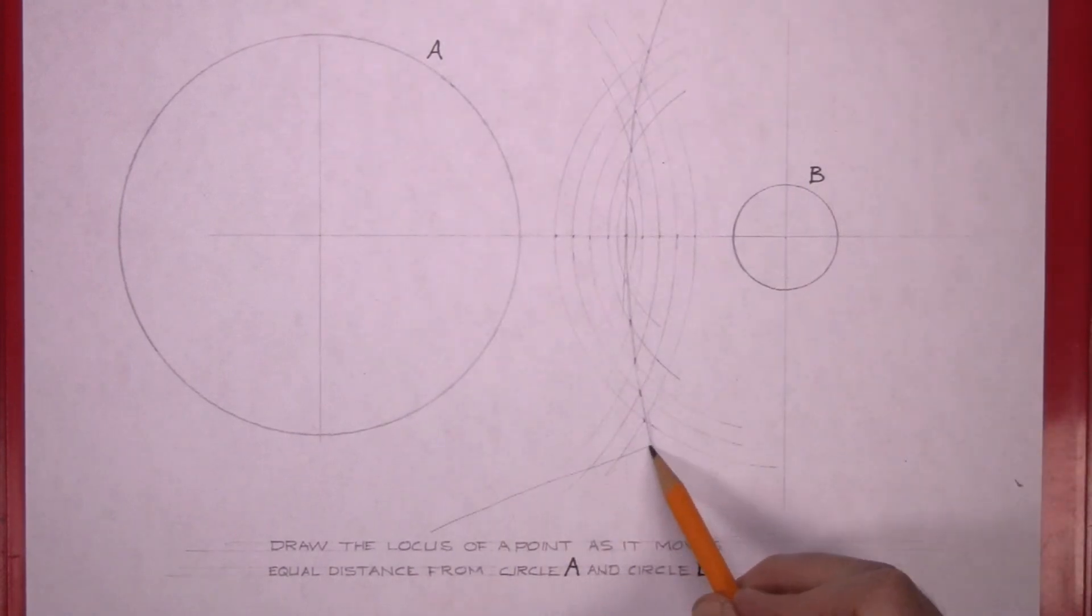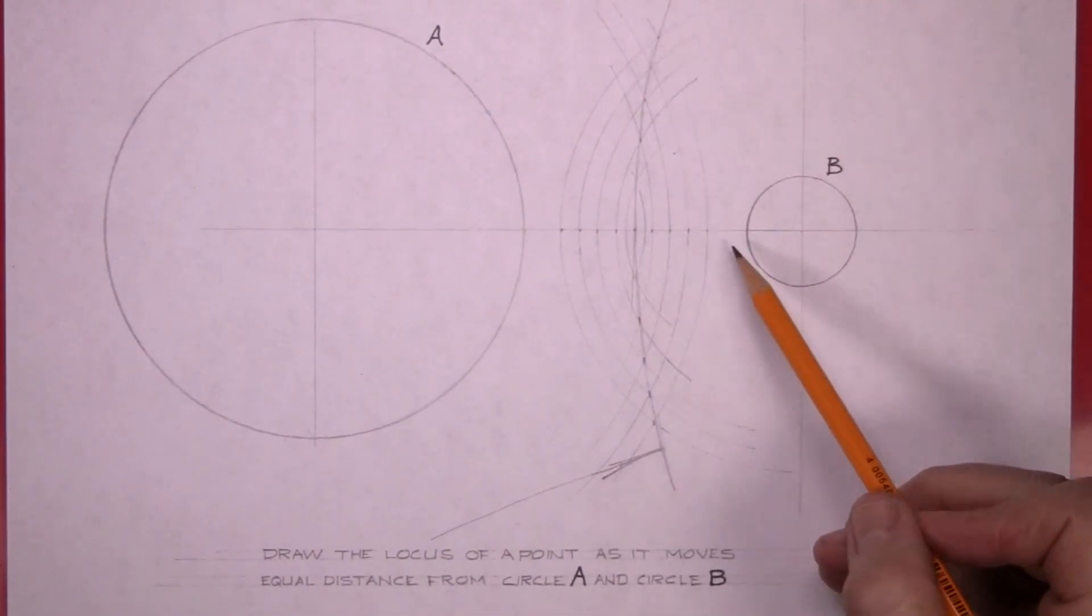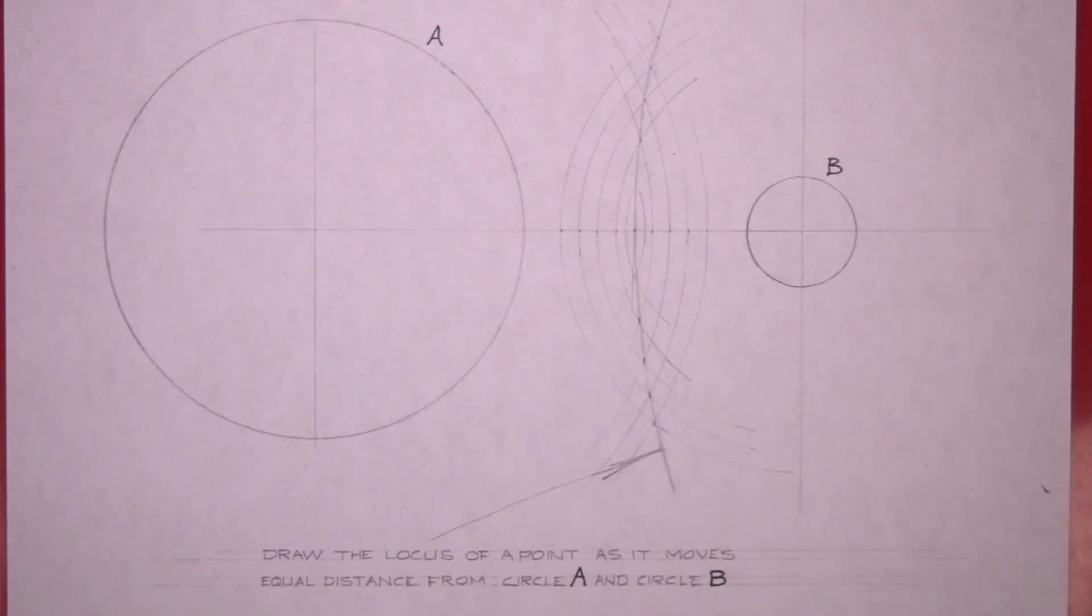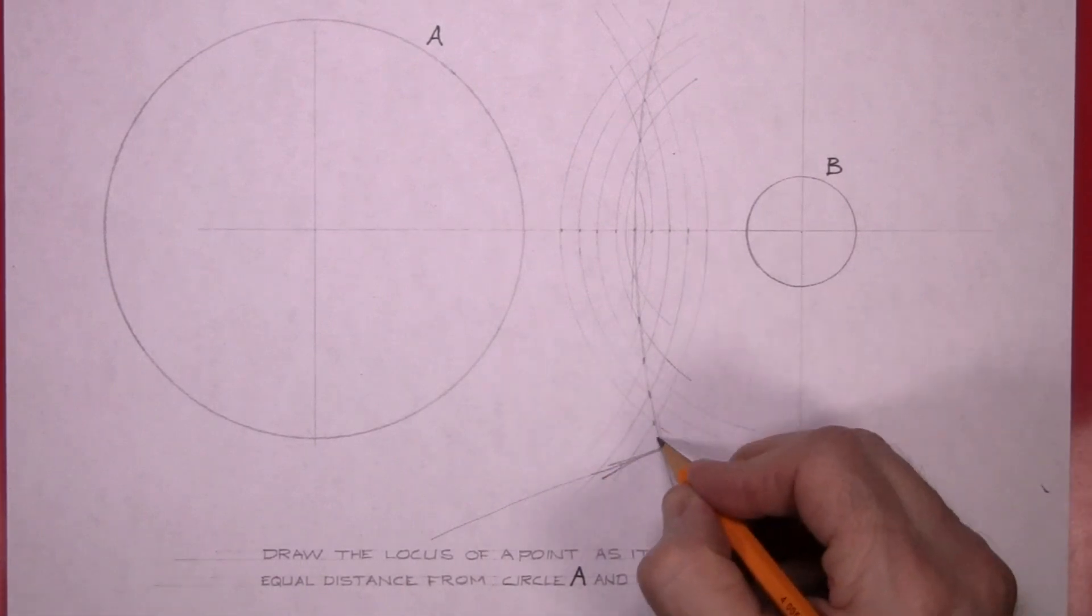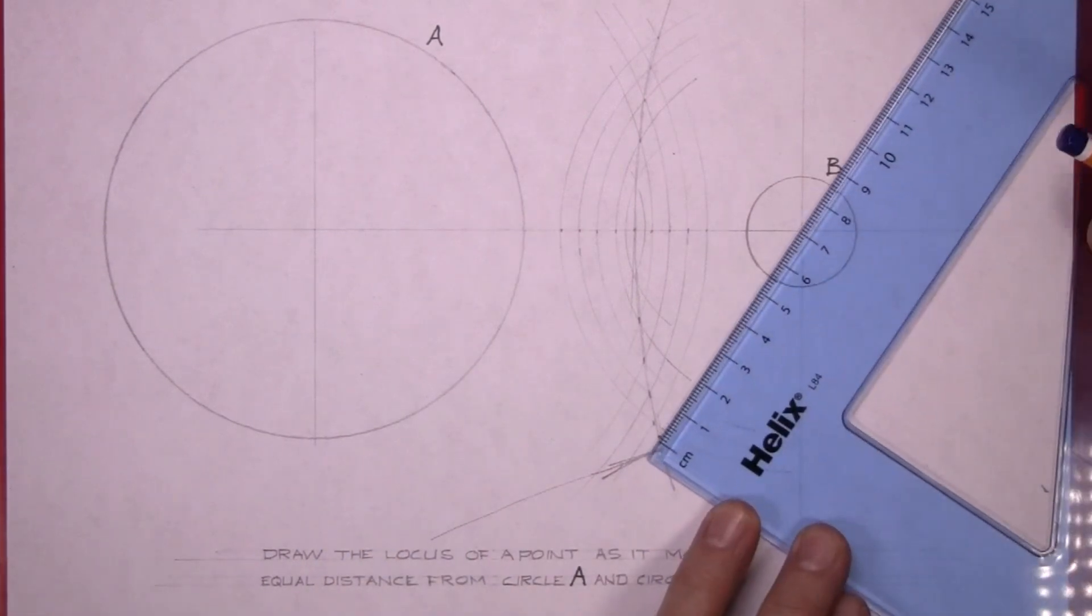So there's your locus question answered. Equal distance from circle B here and circle A here. Every point on that now will be the same distance from the circle.